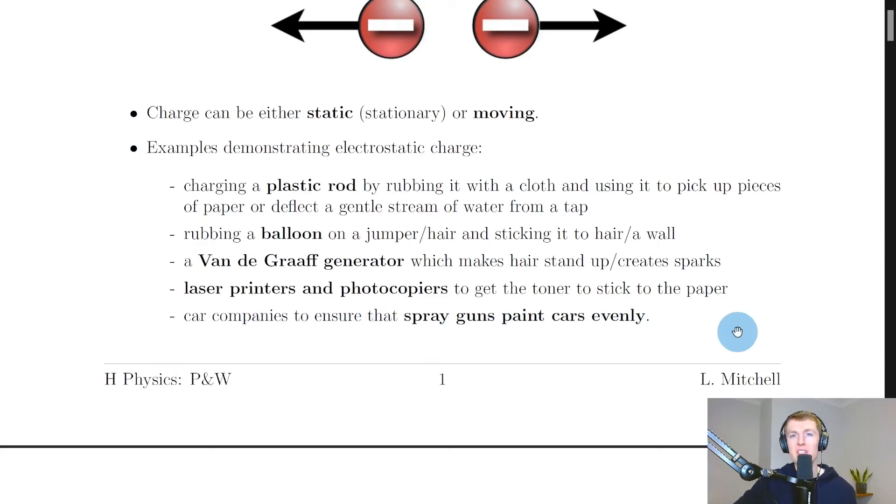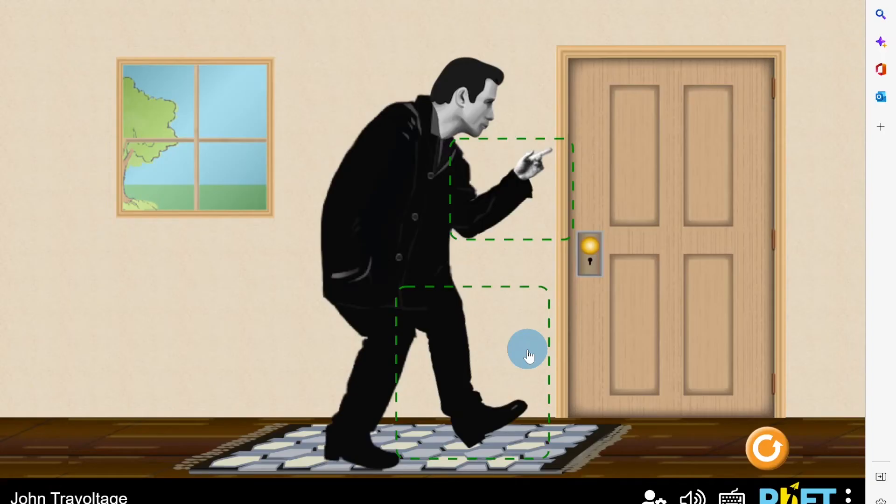I'll now show you one last simulation which demonstrates another example of electrostatic charge. So here we've got John Travolta in a simulation called John Travoltage. I'm showing you this to demonstrate another example of electrostatic charge buildup, which is electric shocks.